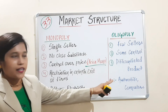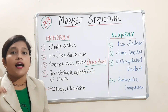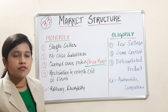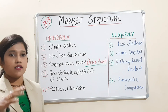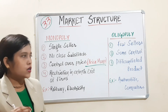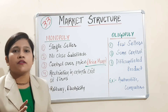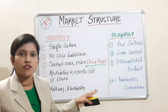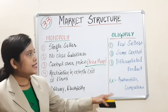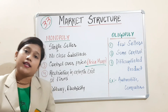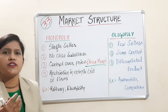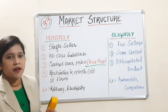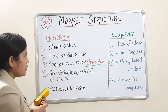Next is oligopoly — another imperfect market. Here there are few sellers, meaning not large in number and not just one — somewhere in between. There is some control over price — not no control and not full control, but some control. Products are differentiated, with different varieties available. Examples include automobile markets and computer markets, where you can find a large number of varieties. There are also different types of oligopoly situations which will be discussed in the individual chapter.